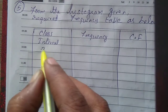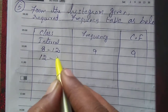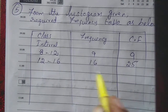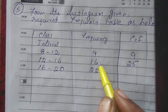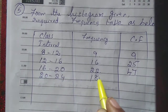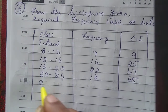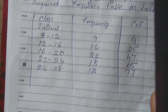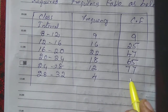The first class interval is 8 to 12 with frequency 9, so our starting cumulative frequency is also 9. Then 12 to 16 has frequency 16, so cumulative frequency becomes 9 plus 16 equals 25. Next, 16 to 20 has frequency 22, so cumulative frequency is 9 plus 16 plus 22, which is 47. Then 20 to 24 is 18, giving cumulative frequency 65. Then 24 to 28 has frequency 12, cumulative is 77. The last class interval is 28 to 32 with frequency 4, so cumulative frequency is 81.